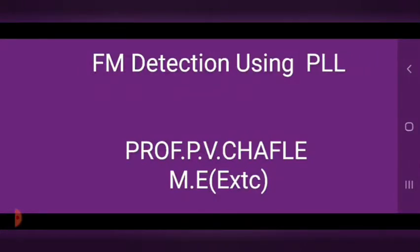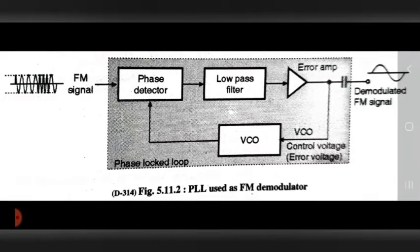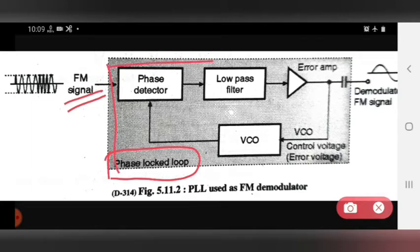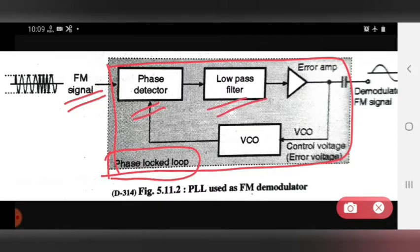Today we see the topic of FM detection using PLL — Phase-Locked Loop. In the diagram for PLL used as FM demodulator, the input is an FM signal. The overall phase-locked loop uses different blocks: a phase detector, low pass filter, voltage controlled oscillator, and error amplifier, which together give the output as a demodulated FM signal.